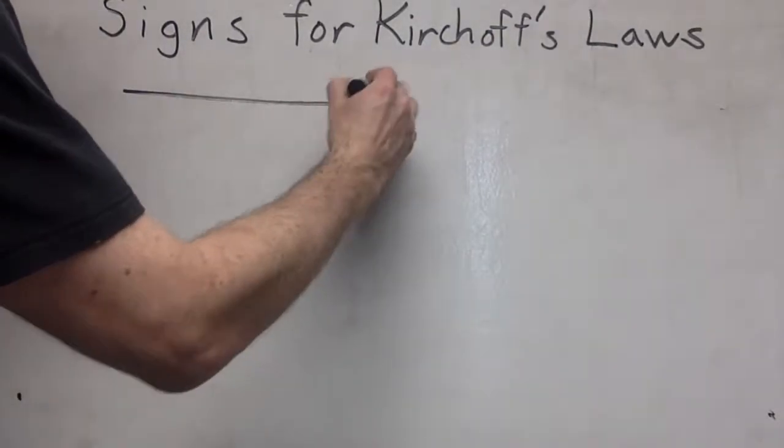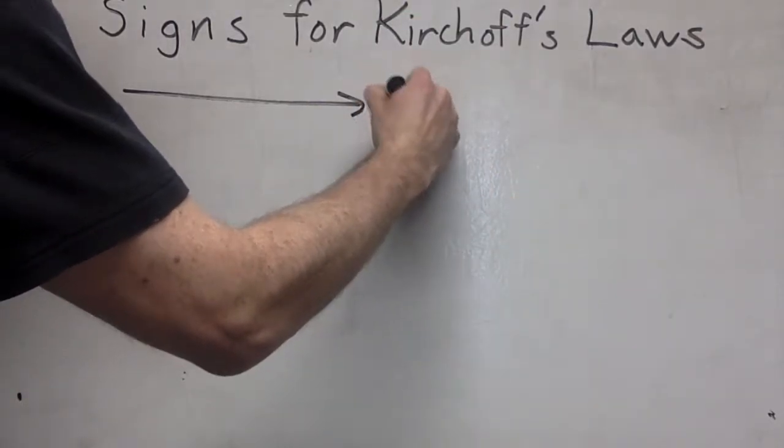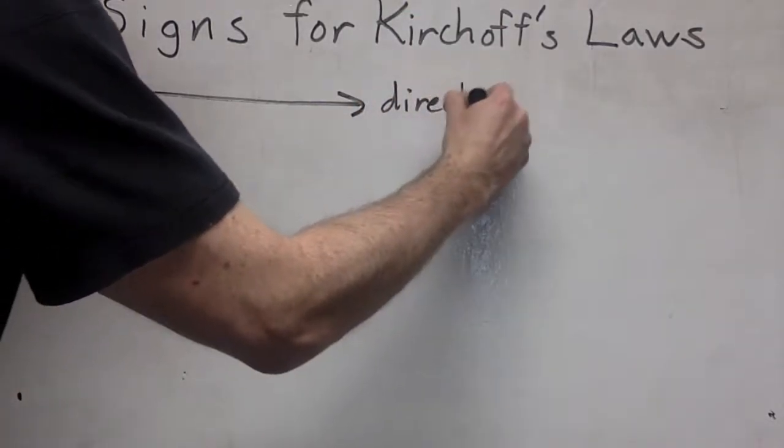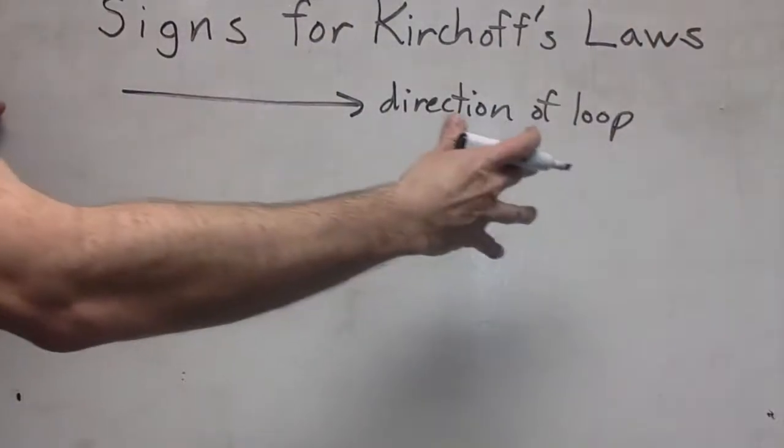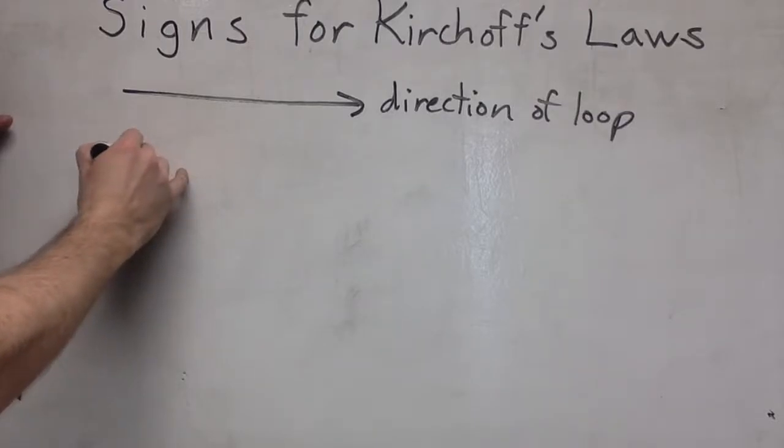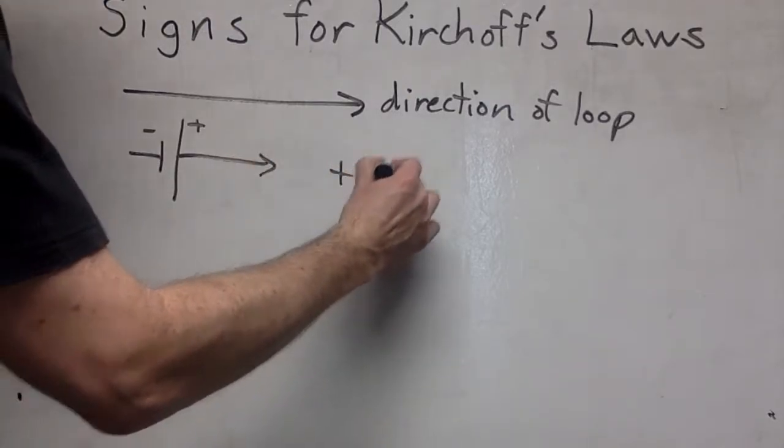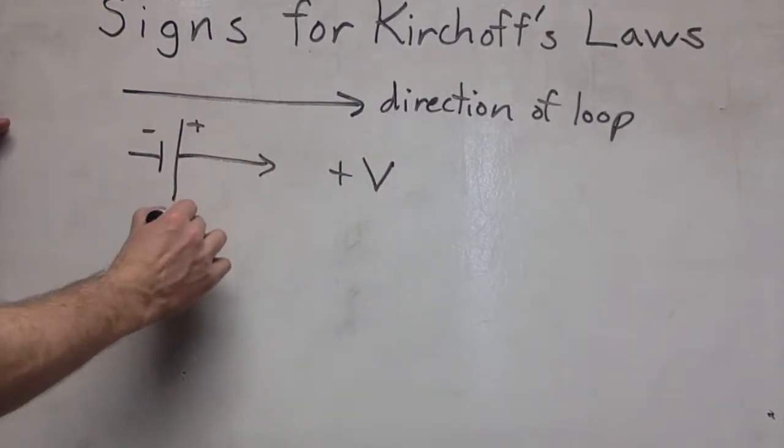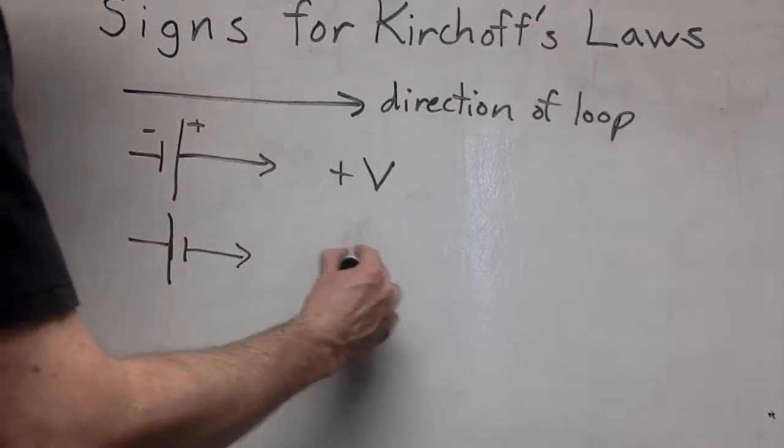Let's suppose you're going around the loop from left to right. If you encounter a battery and you go in the negative end and out the positive end, that counts as plus V. If you go in the positive end and out the negative, that's a minus V.